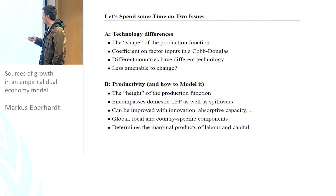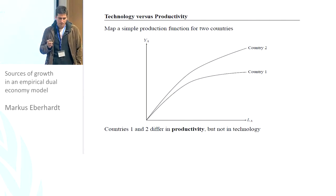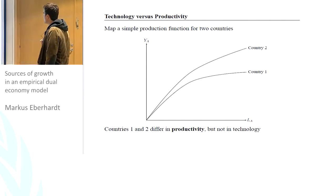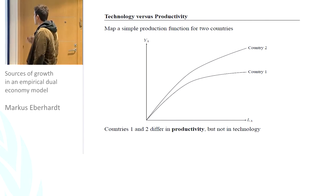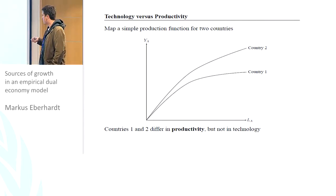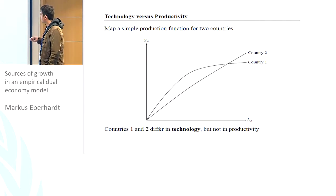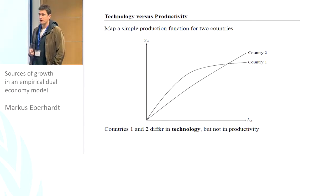Of course, productivity comes into our marginal product of labor calculations. So, very simple graphs to illustrate: these two countries have the same shape of the production function — a very simple one just in labor, because we can present it in this two-dimensional space. But as you see, they have the same technology, the same shape of the production function, but different productivities — the height of the production function differs. In contrast, these two countries have different technologies: one is a linear technology and the other a very linear technology, but they're basically similar in productivity.